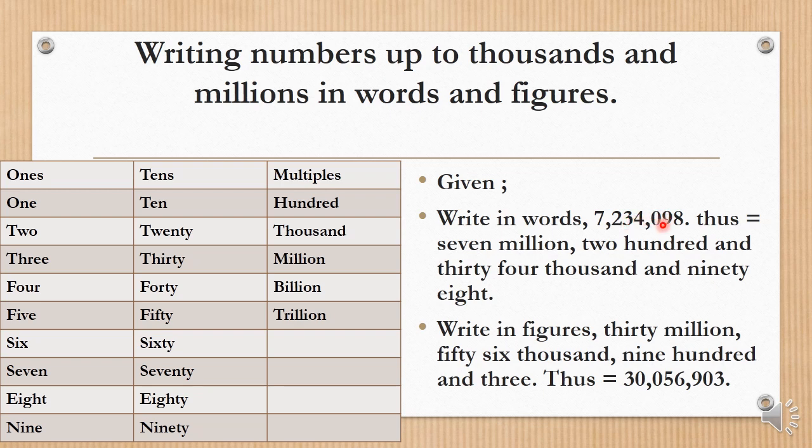Once you're given more than three digit numbers, from four digits upwards, you start separating periods so that you can count them. Now let's avoid all these numbers and start from four. 4,098. When there is one comma and the existence of only one period, what do we call the comma? Thousand. That is four thousand and ninety eight.